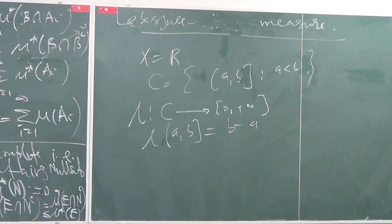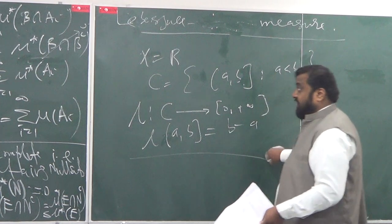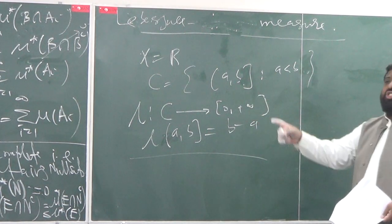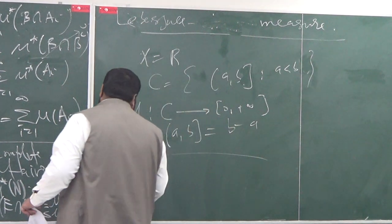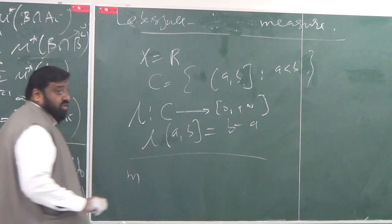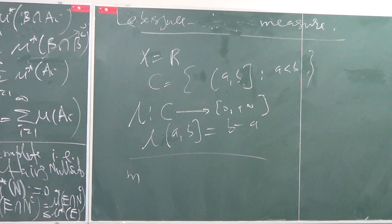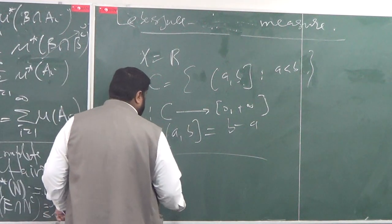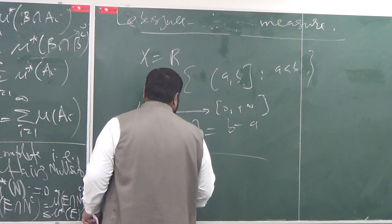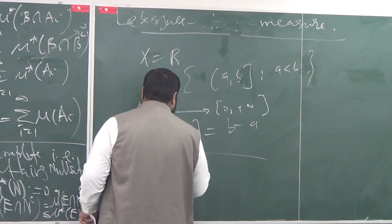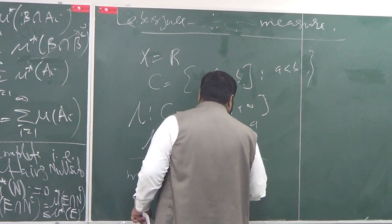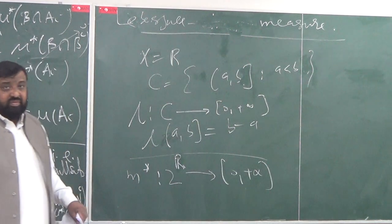X is R, C is [a,b), L is a map. Then by definition, by the first result, I can construct an outer measure. I'm going to name it M star, Lebesgue outer measure. That is going to be a map from all subsets of R into [0, +∞).